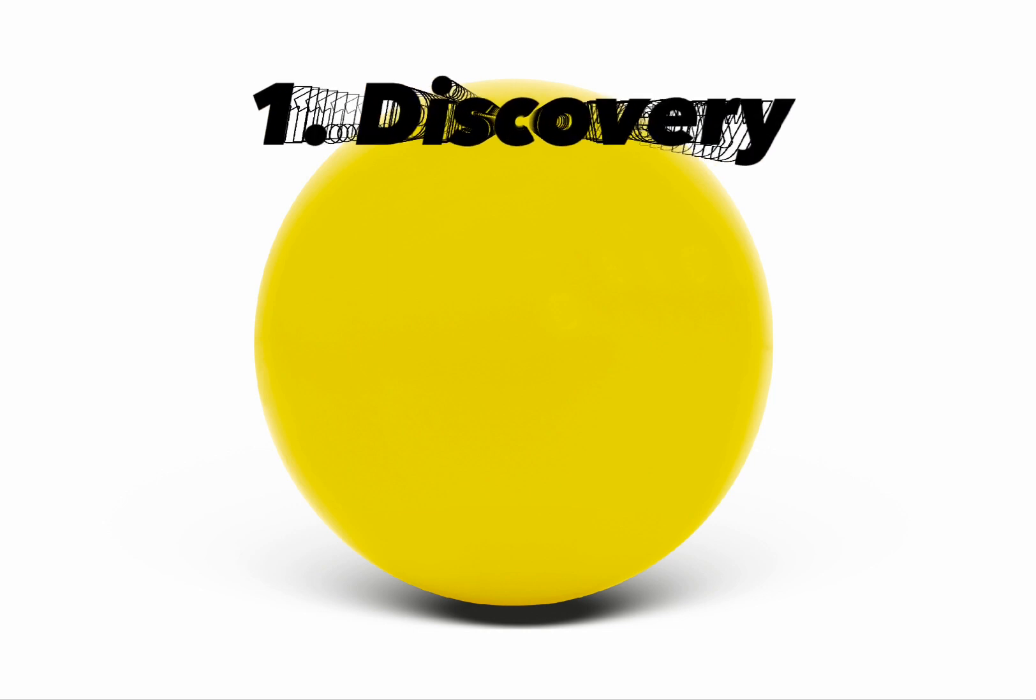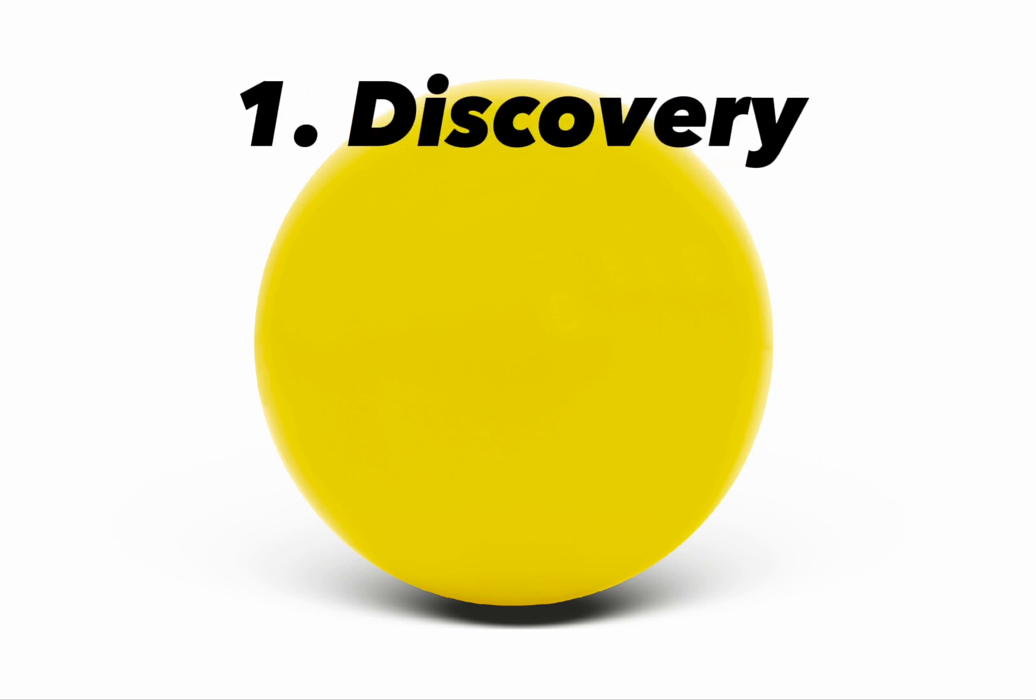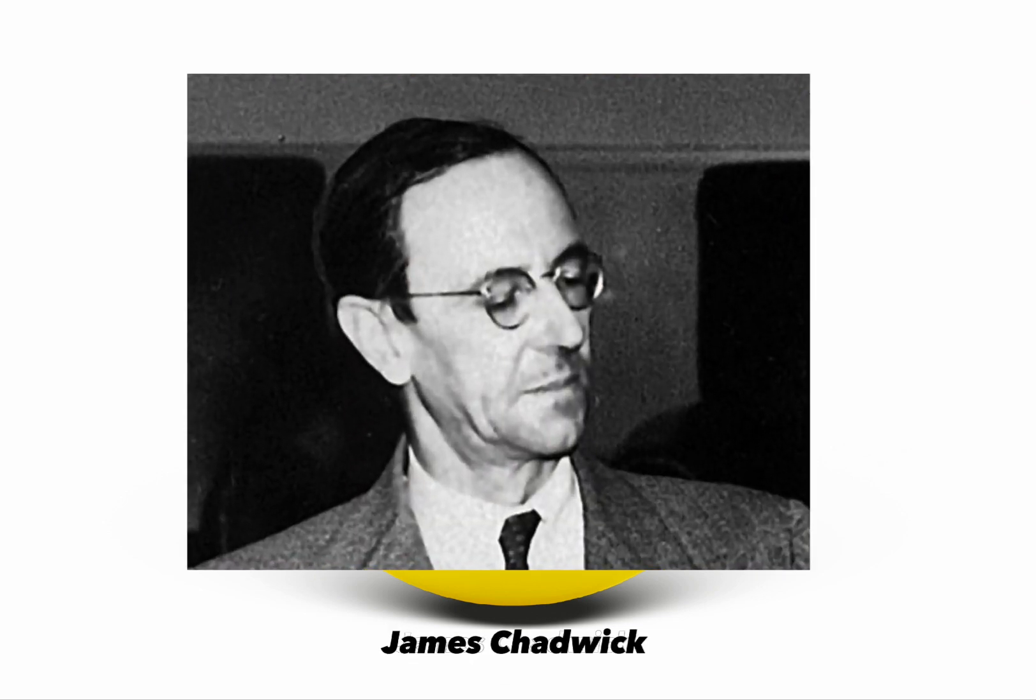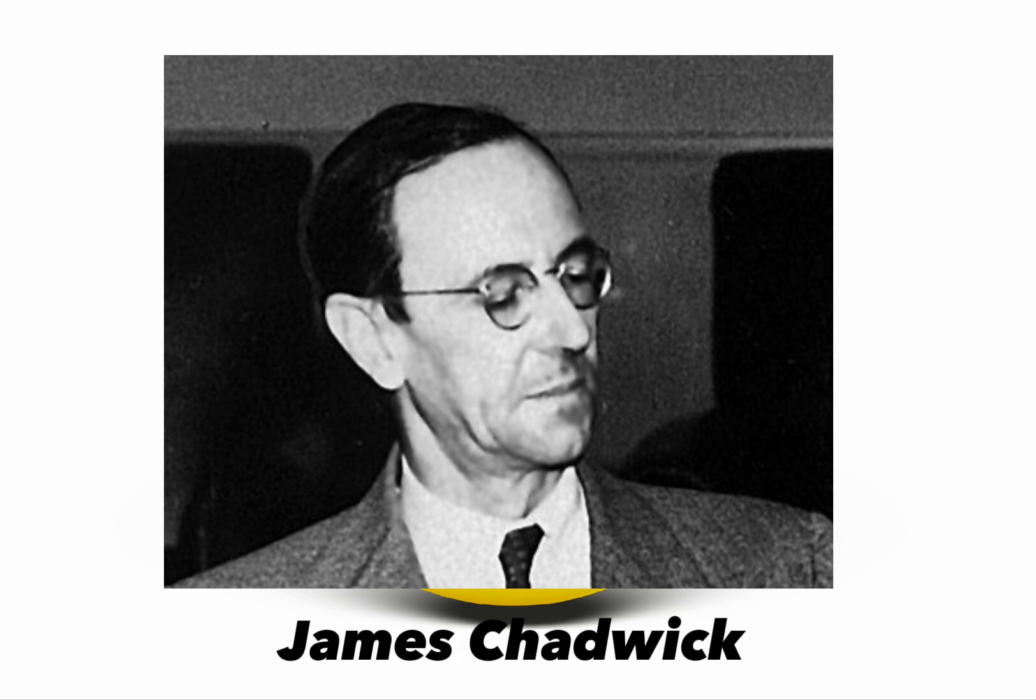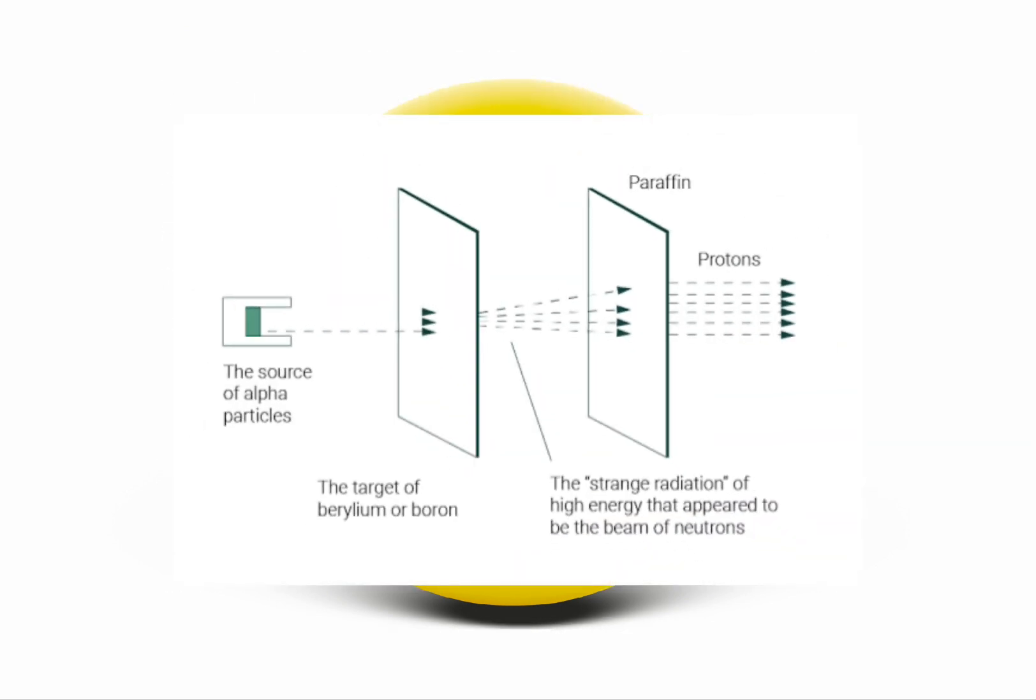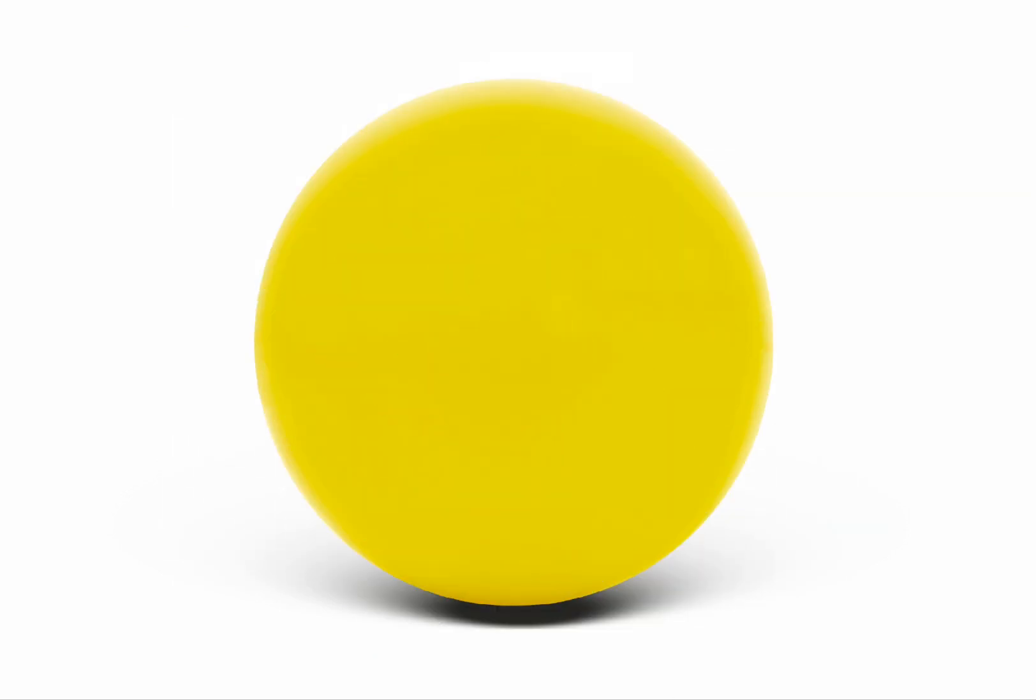10 Facts You May Or May Not Have Known About Neutrons. 1. Discovery. Neutrons were discovered by physicist James Chadwick in 1932. Through ingenious experiments involving the scattering of alpha particles by atomic nuclei, Chadwick provided conclusive evidence for the existence of these subatomic particles, revealing a crucial piece of the puzzle in understanding the structure of the atom.